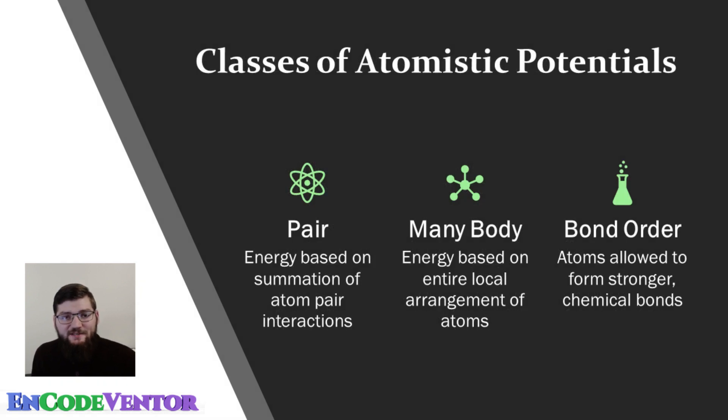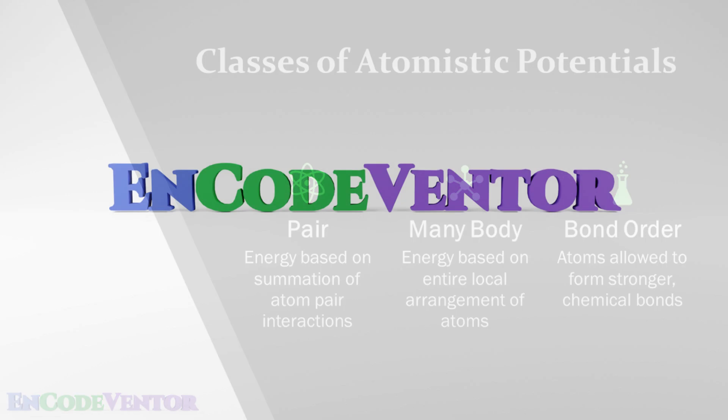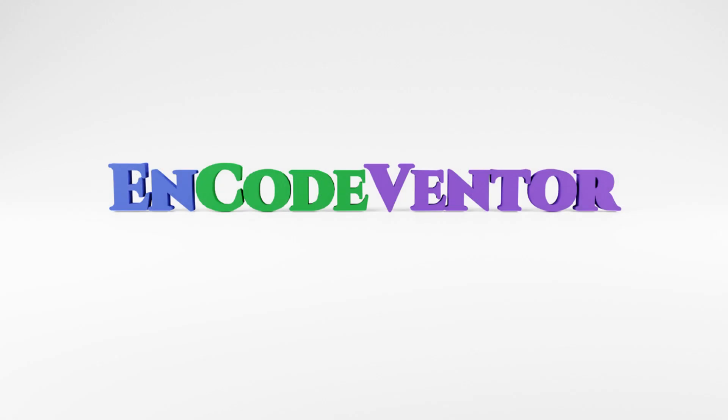So those are the basic categories of potentials. Hopefully this gets you started and gives you a place to start looking for potentials to model your systems and to evaluate what type of potentials I need for the information that I'm trying to get out of my model. If you noticed any important potentials that I missed, I'm always looking for new potentials and the ways those potentials are used. So leave those potentials in the comments below. And thanks for watching. I'll see you next time.